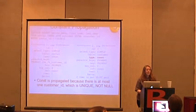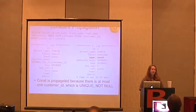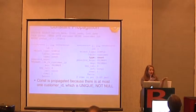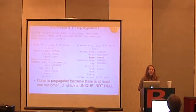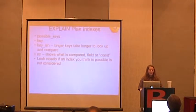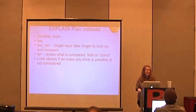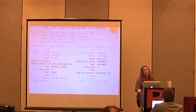There's also no data access strategy, which is technically the fastest. If you do SELECT 1 + 2, that doesn't have a data access strategy because it's not accessing any data. There are index columns showing the possible keys, the actual key used, and the key length. One way to debug a query is to ask, why isn't the index I think should be used even appearing in possible keys? You can debug it that way.